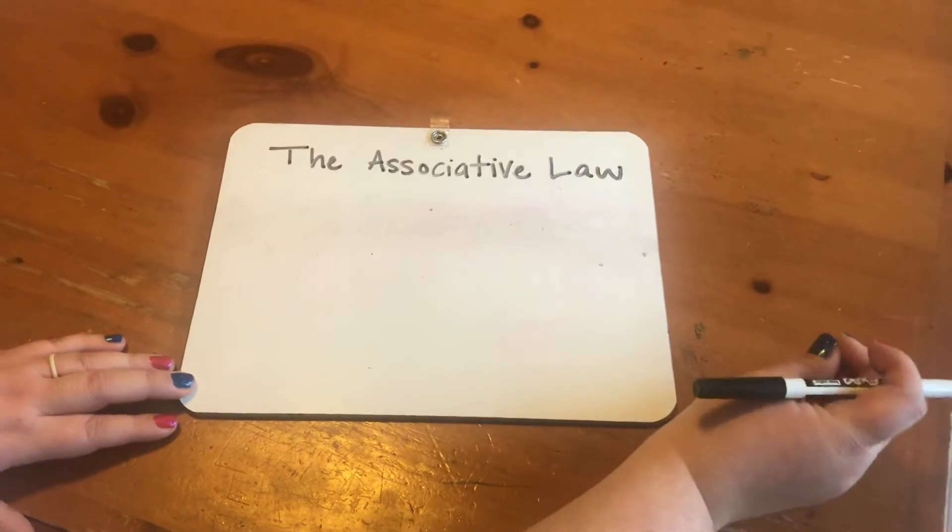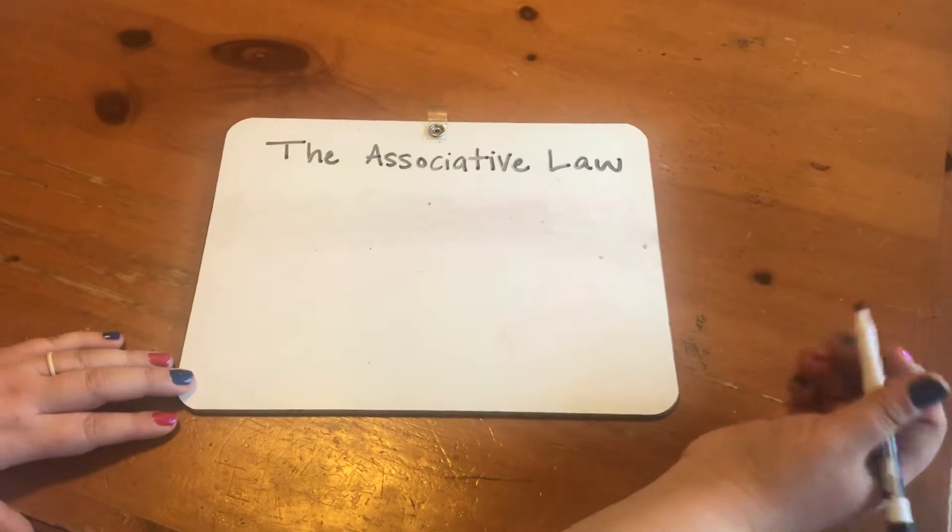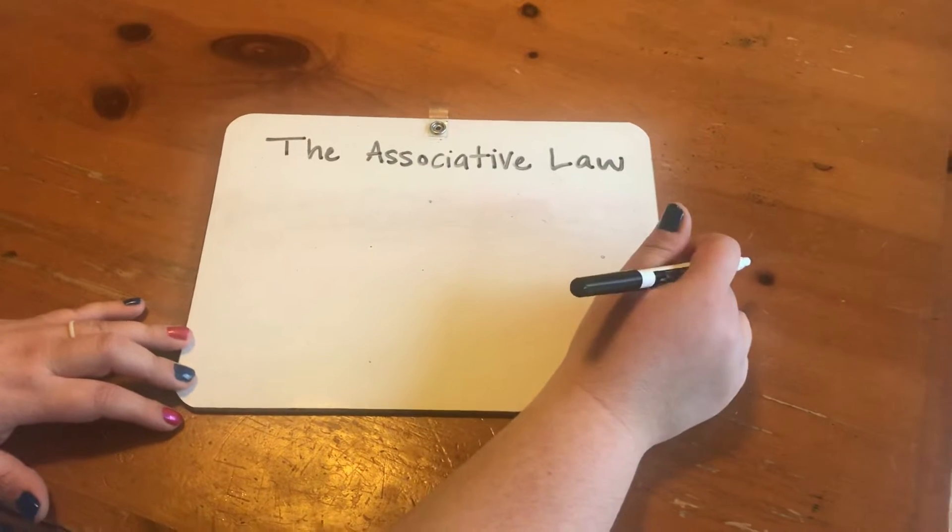Hi, this is CC Cycle 2 Week 21 Math, the associative law for addition and multiplication.